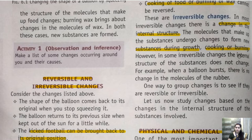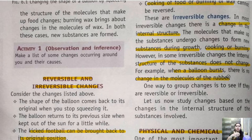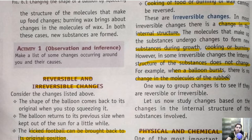However, in some irreversible changes, the internal structure of the substance does not change. For example, when a balloon bursts, there is no change in the molecule of the rubber. When I burst the balloon, the rubber will not convert into paper or plastic — the rubber will remain rubber. Its shape changes, its size changes, its pattern changes, but the main molecule will remain as it is. So this is the example of an irreversible change in which the internal structure does not change.